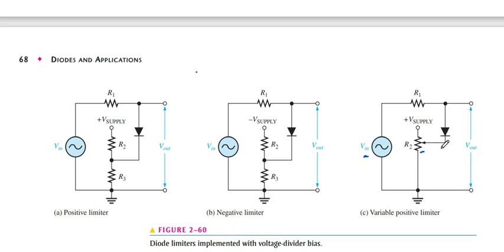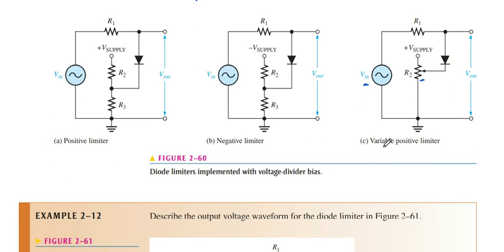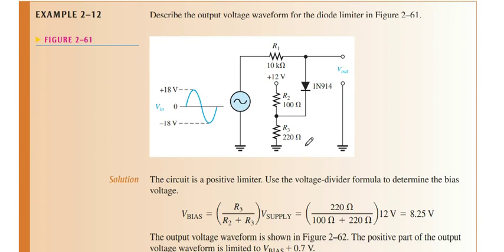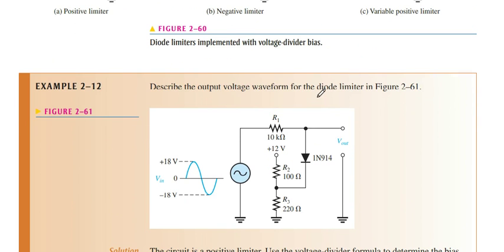And this is the variable positive limiter. We get a limiter that increases or decreases with the change of R2, or with the change of the pointer position of the variable resistor on the diode input. So this also gives the example of the above position. There, the diode is used as a positive limiter.